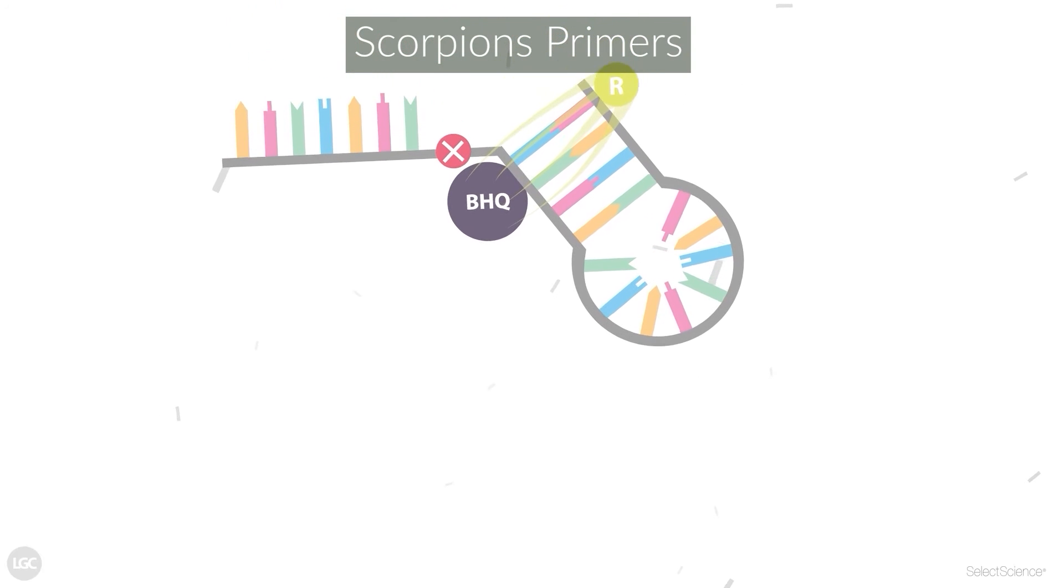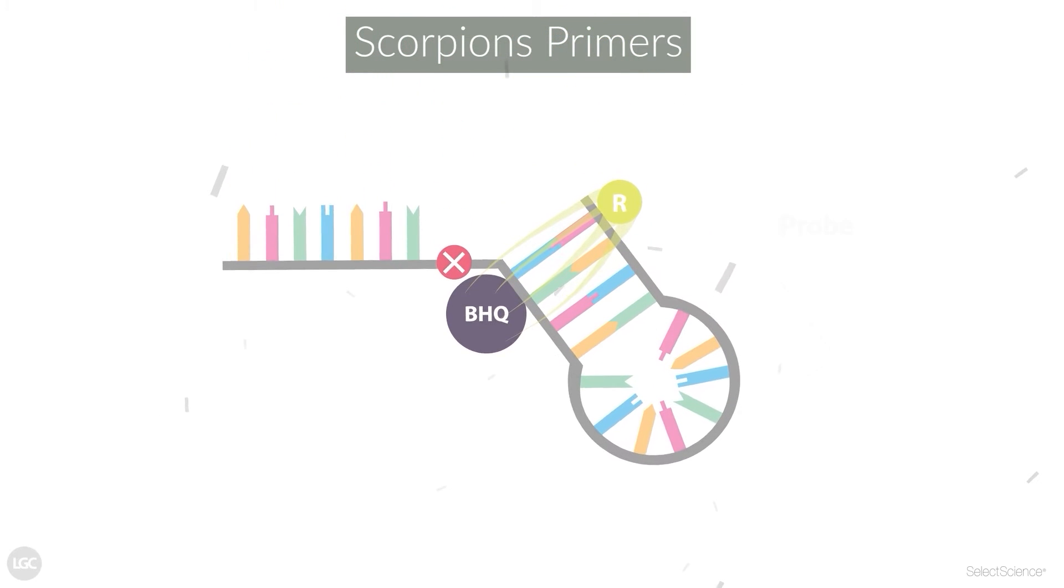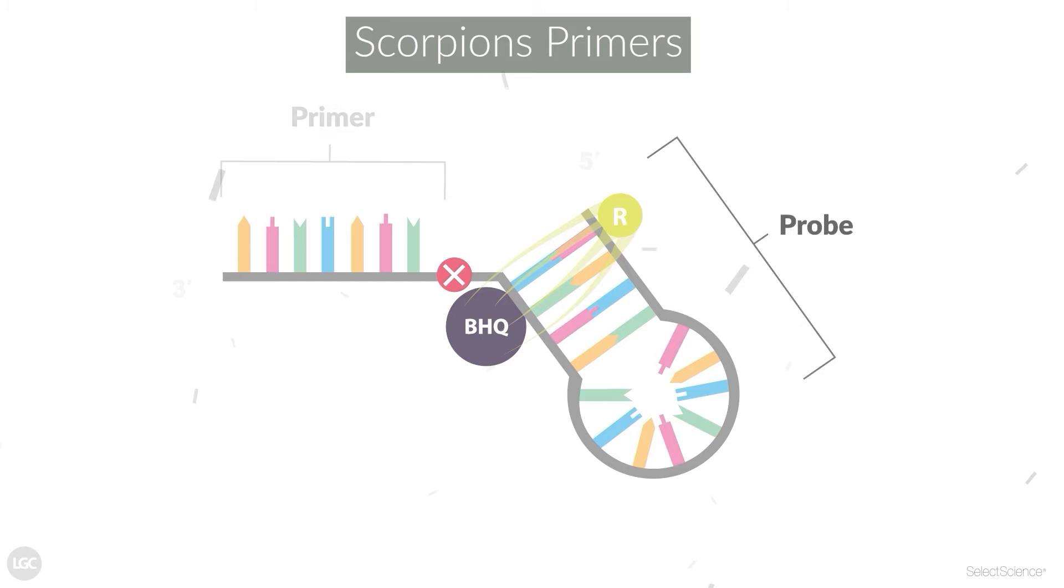Scorpion's primers combine primer and probe in one single molecule. They contain a primer sequence at the 3' end and a hairpin loop structure at the 5' end.